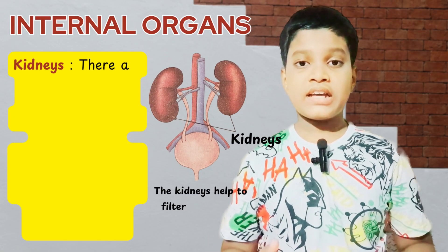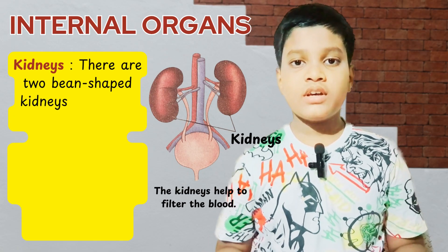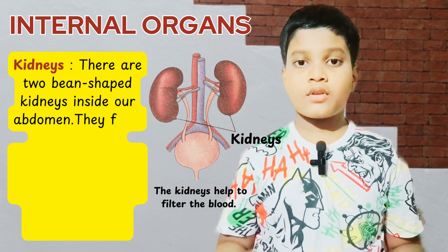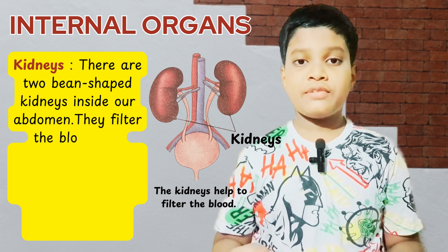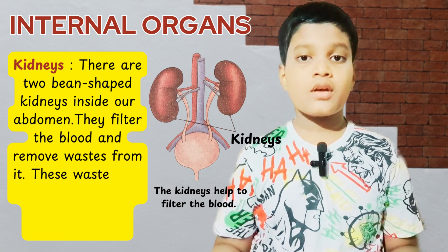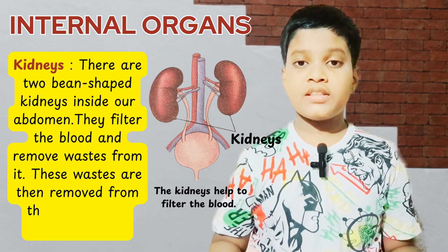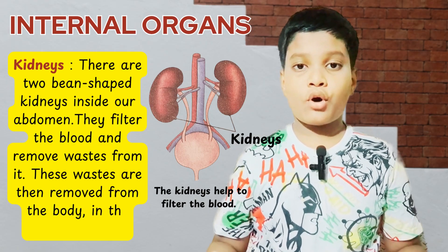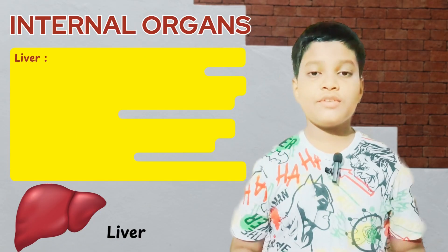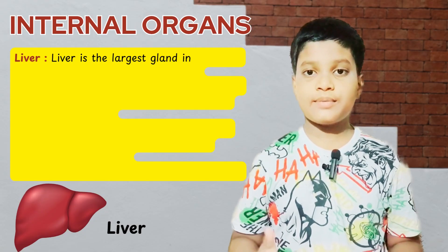Kidneys: there are two bean-shaped kidneys inside our abdomen. They filter the blood and remove waste from it. These wastes are then removed from the body in the form of urine.